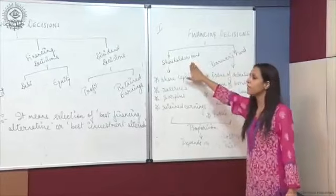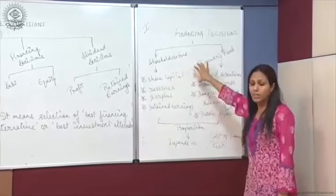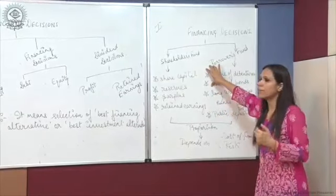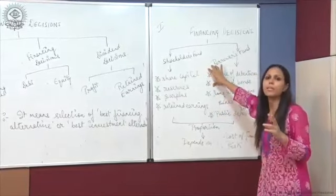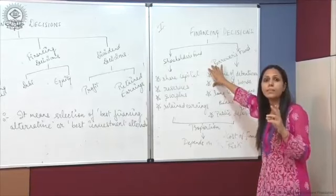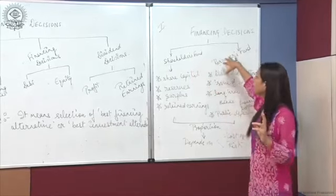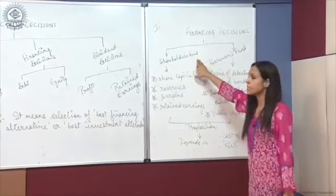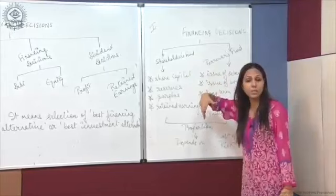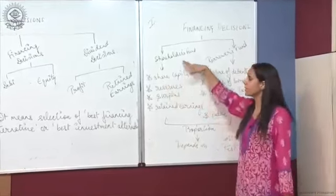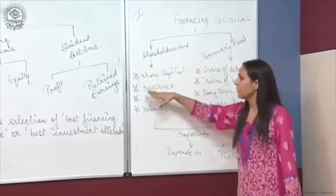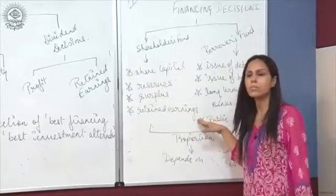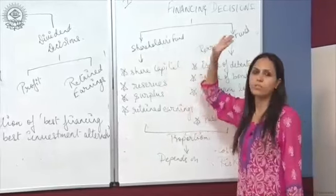As discussed in the previous lecture, there are two main sources of raising funds. Shareholders fund means owners fund or equity. It consists of share capital, reserves, surplus, and retained earnings. These are the parts of shareholders fund.